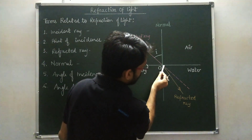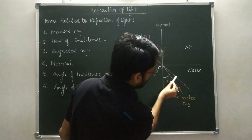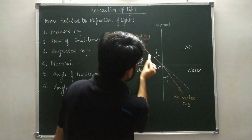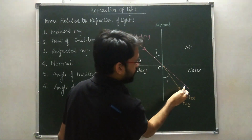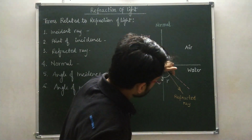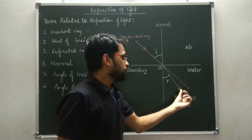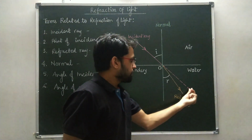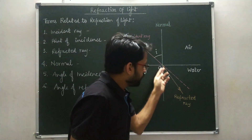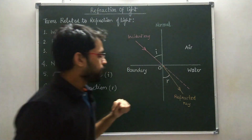In the diagram, you can see this dashed line. This dashed line is the path of the incident ray in the second medium. This line is also important because it shows how much the refracted ray is deviated from its original path.